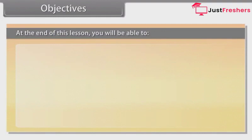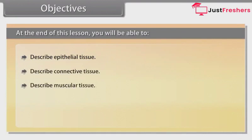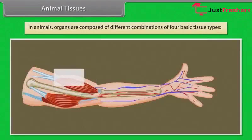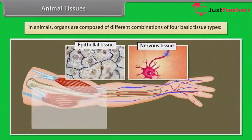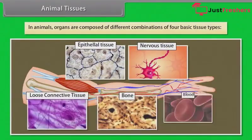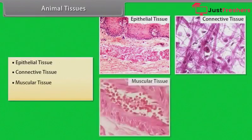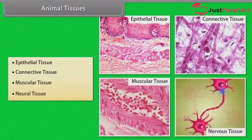Objectives: At the end of this lesson, you will be able to describe epithelial tissue, describe connective tissue, describe muscular tissue, describe neural tissue, and describe organ and organ system. In animals, organs are composed of different combinations of four basic tissue types: epithelial tissue, connective tissue, muscular tissue, and neural tissue.